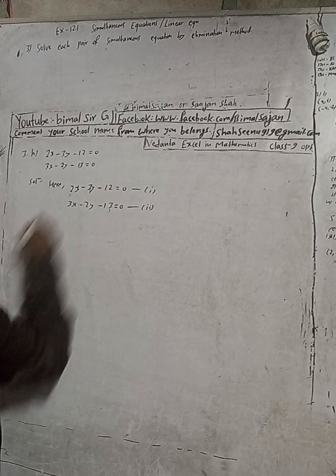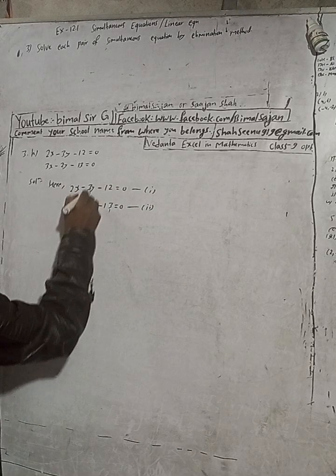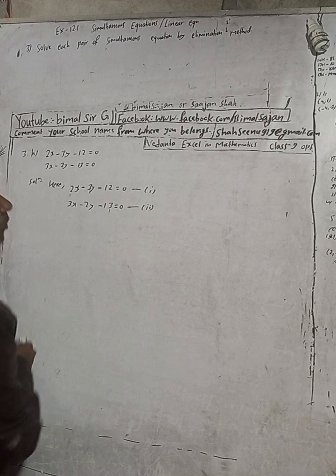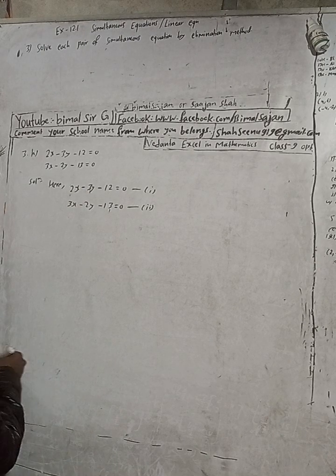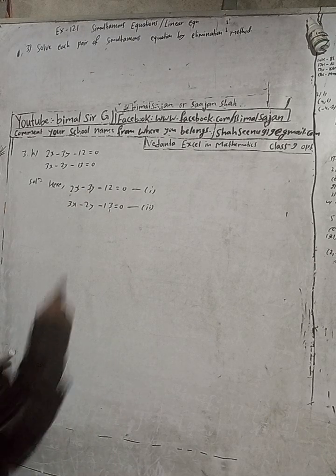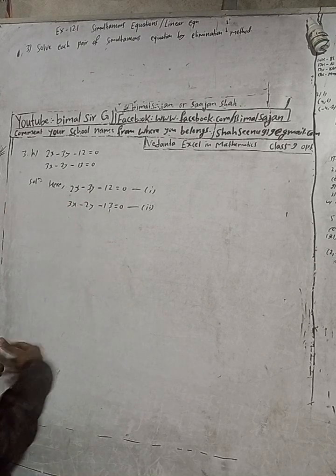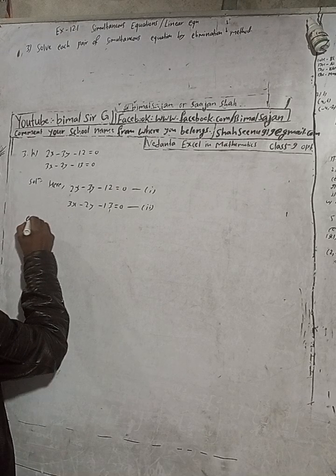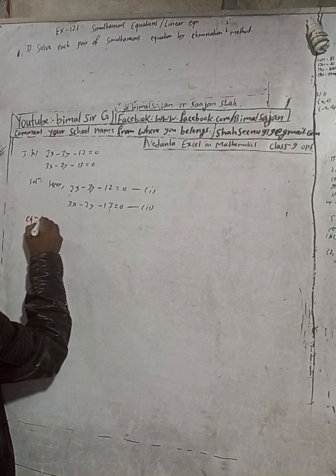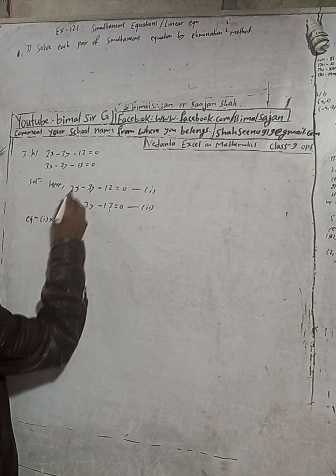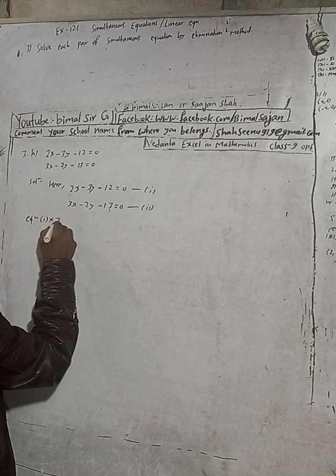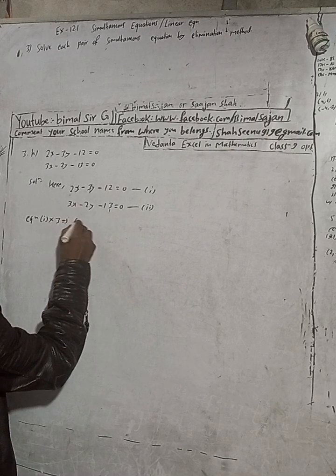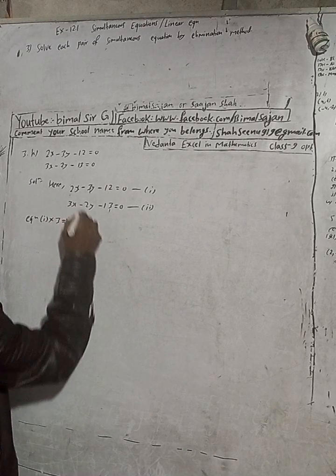Here the coefficients of x are different and y is also different, so to make them the same we have to multiply. We multiply equation 1 by 3, so equation 1 times 3 gives us 6x.